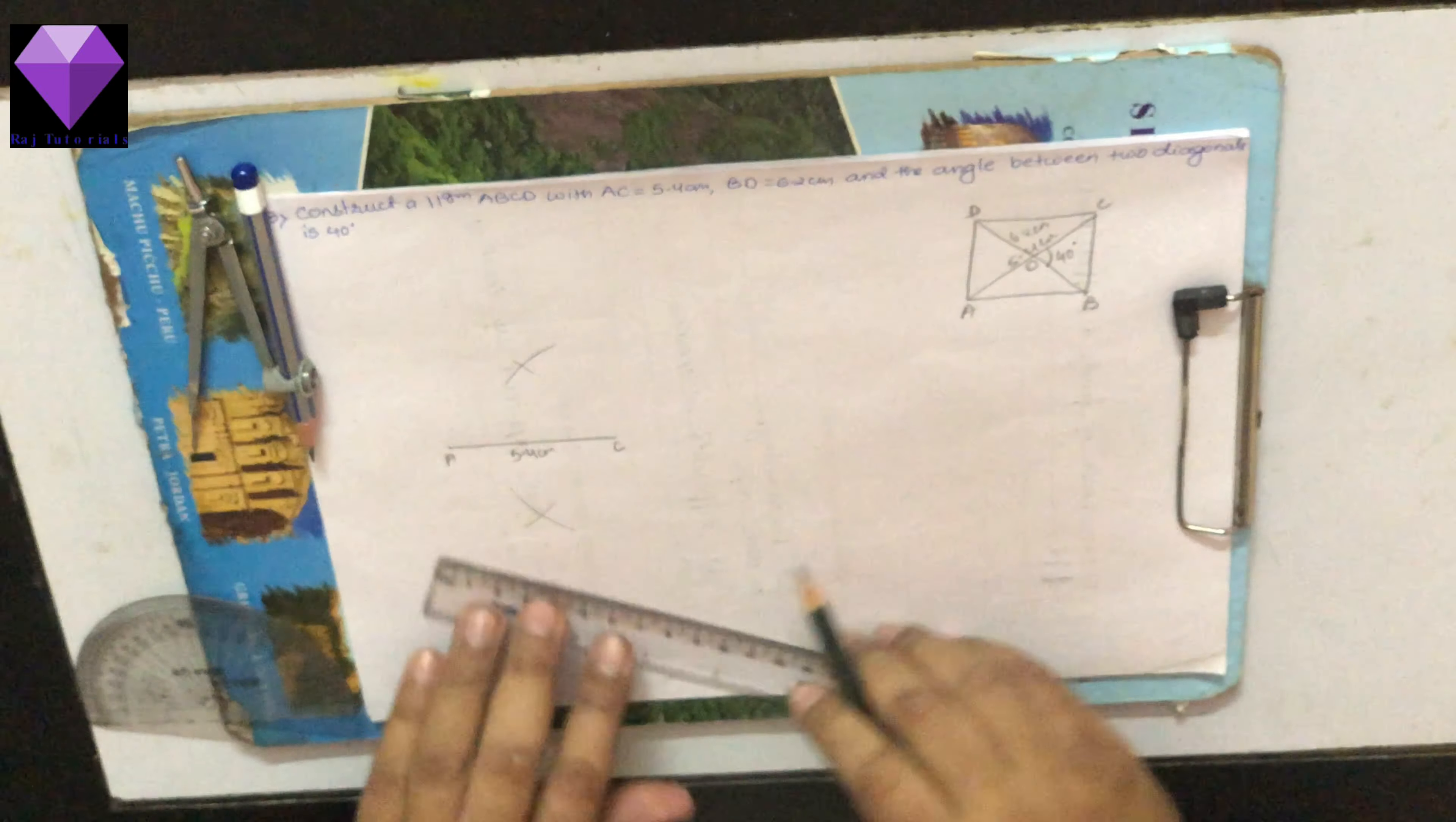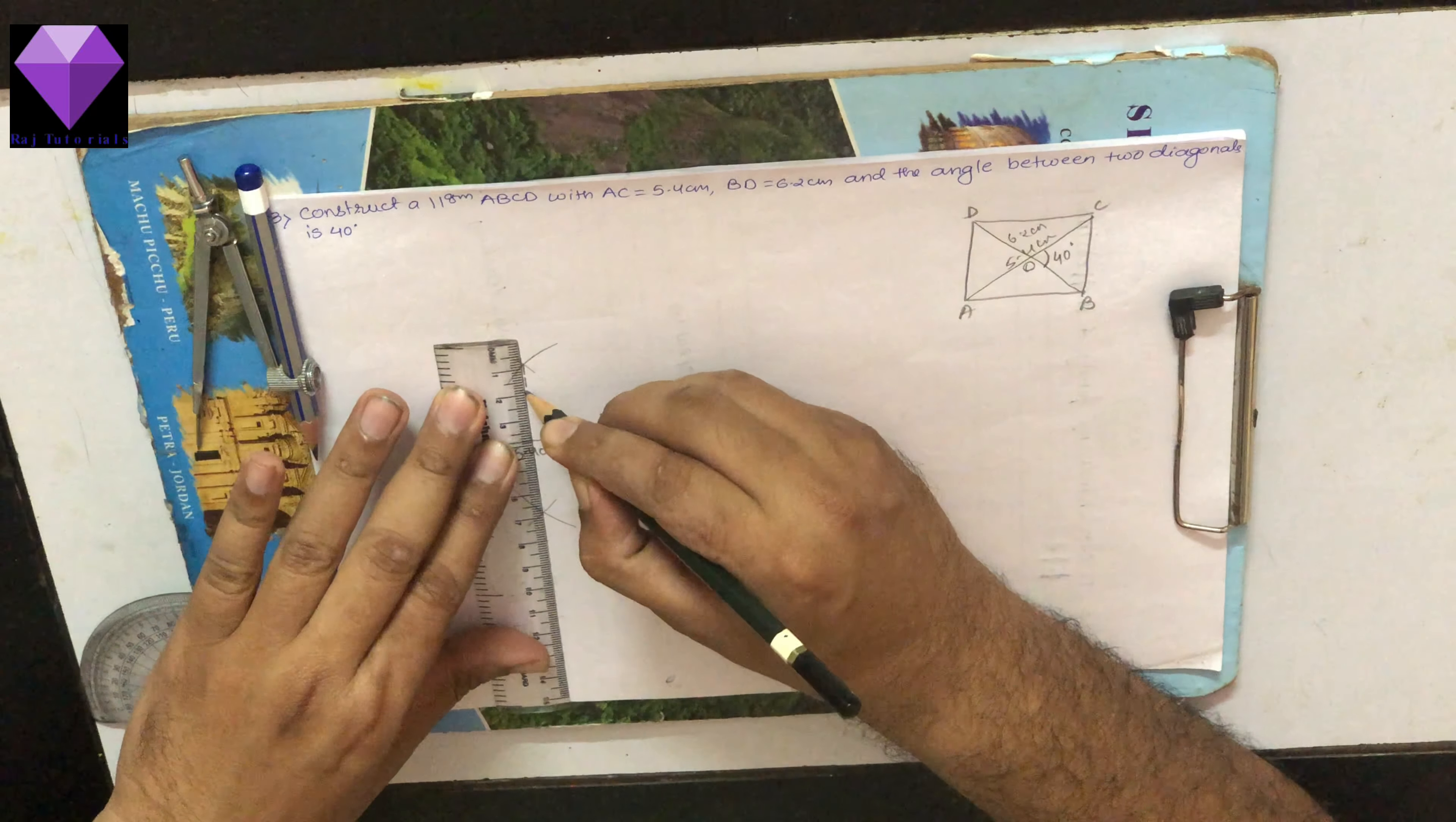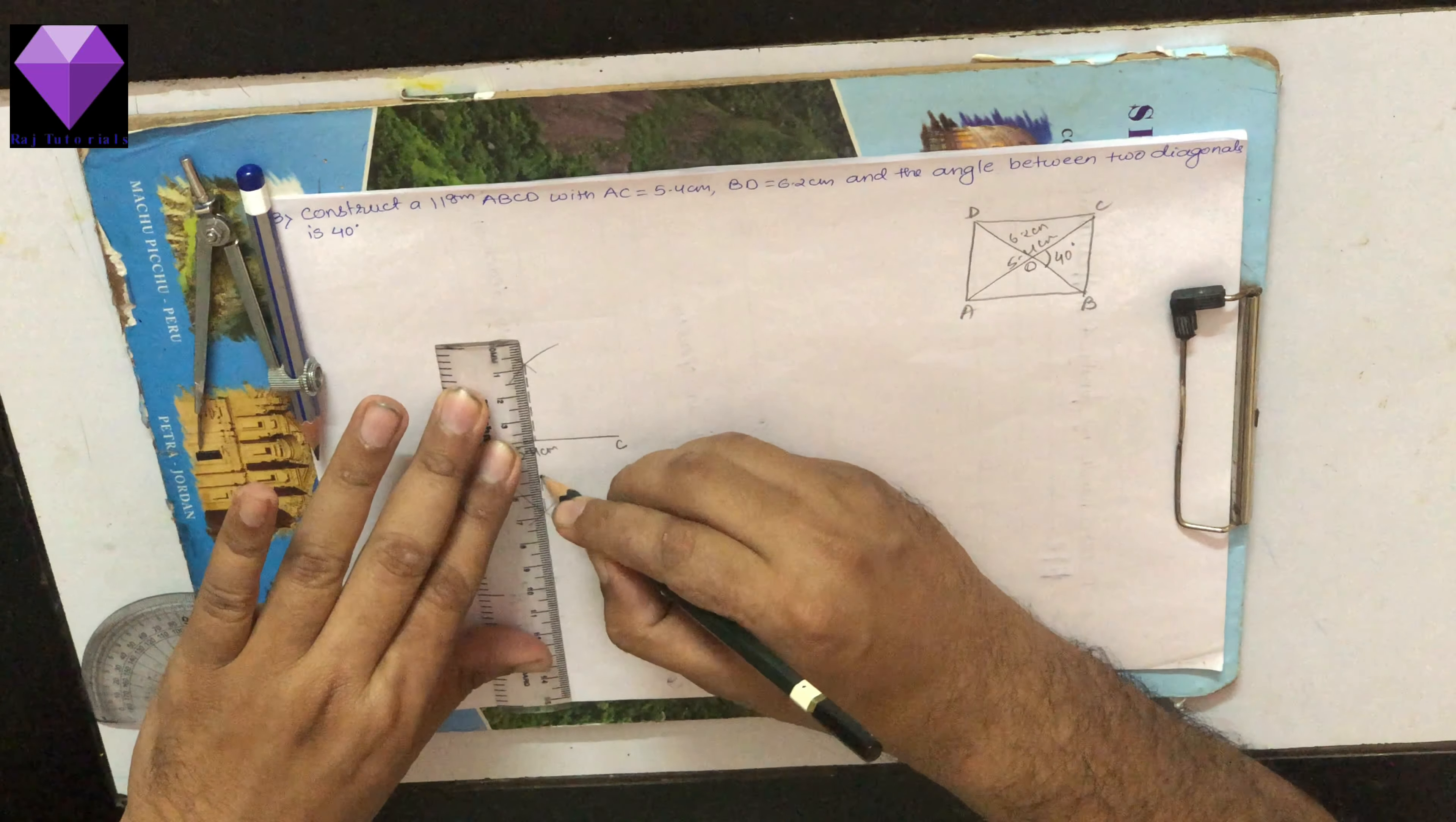And this line I am joining with a dotted line because I need only the O point. I don't need anything else from this line. I need the center point only.